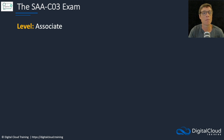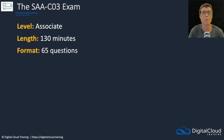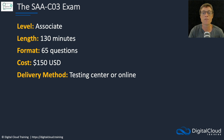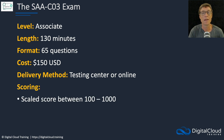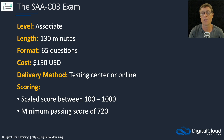The C03 exam is an associate level exam. Whether it's C02 or C03, it's still the Solutions Architect Associate exam — it's designed for that specific job role. It's 130 minutes long and you get 65 questions. The cost is 150 US dollars. If you've previously taken another exam, make sure you use your exam voucher, which will discount that by 50%. The delivery method is either through a testing center or online with proctoring. Scoring is scaled between 100 and 1000 points and the minimum passing score is 720 points.